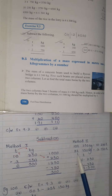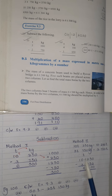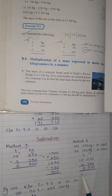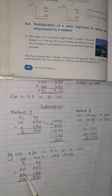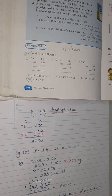Method 2: 10 tons 250 kg — write as 10.250 tons. 3 tons 750 kg — write as 3.750 tons. When you subtract, aligning the decimal points, your answer is 6.500 tons. Next example: 60 tons minus 25 tons and 150 kg. Here, 60 tons has no kg. Subtracting 25 tons and 150 kg gives 34 tons and 850 kg.